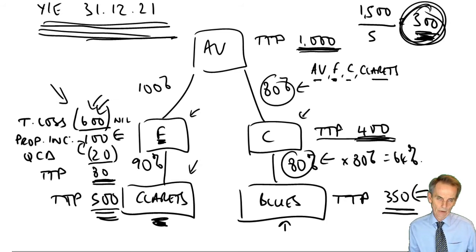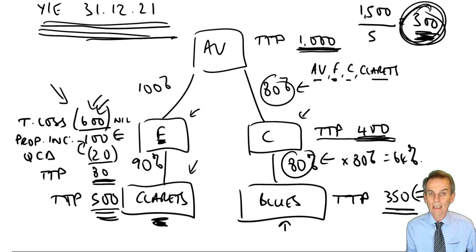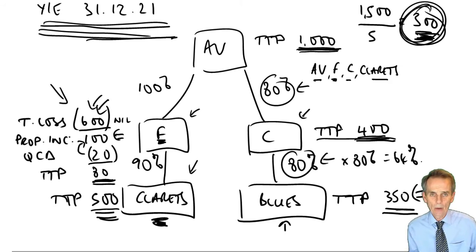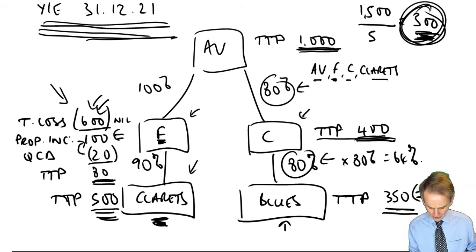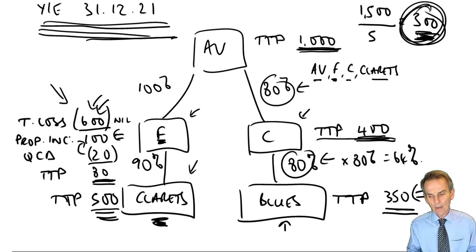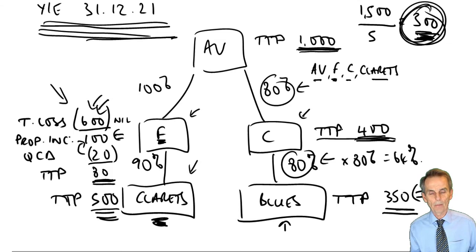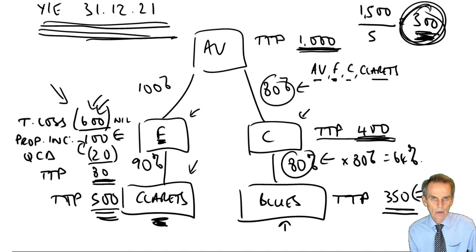What is the loss eligible for group relief? It's £600,000 — any amount of a current period trading loss is eligible for group relief. So where do we put it? Does it matter where we put it? Yes, it does — because although it's in the same accounting period and there's no danger of wasting qualifying charitable donations, we do have an issue about that third objective: we want to avoid making quarterly instalment payments.